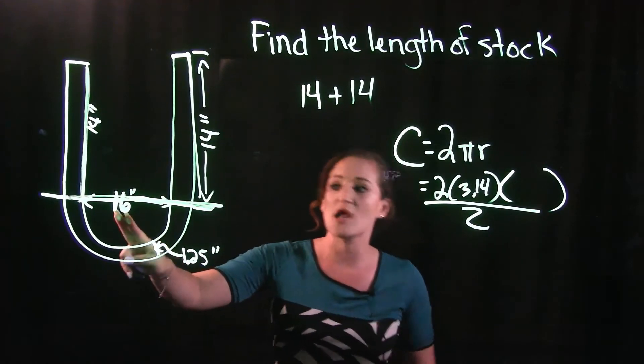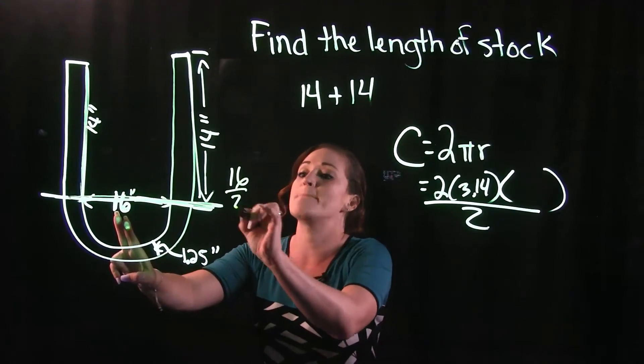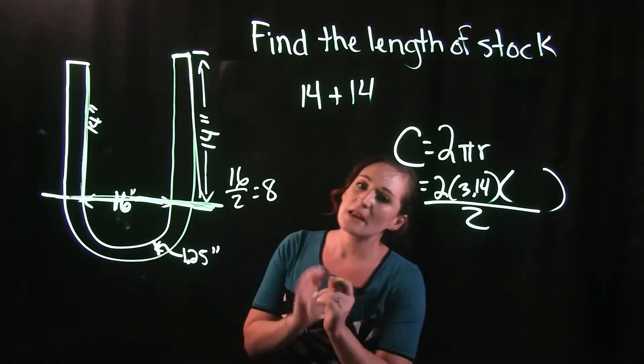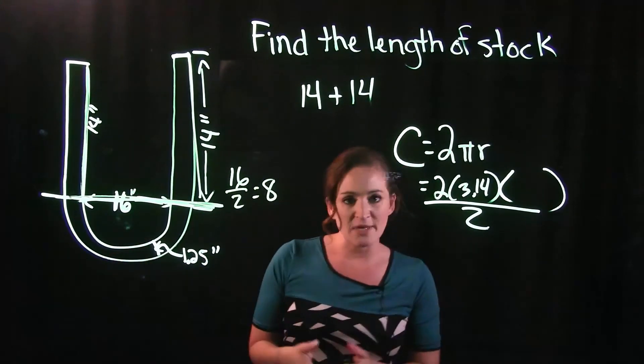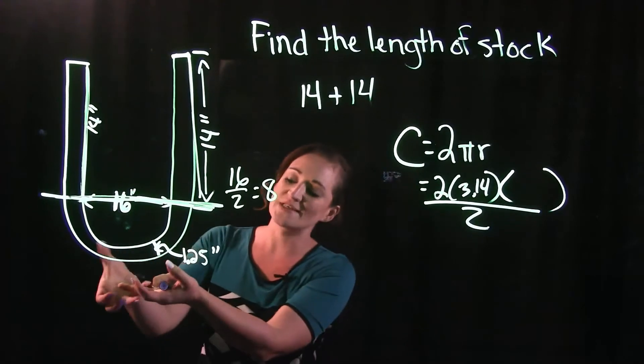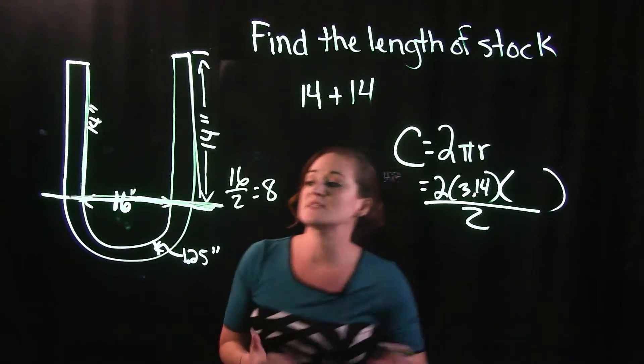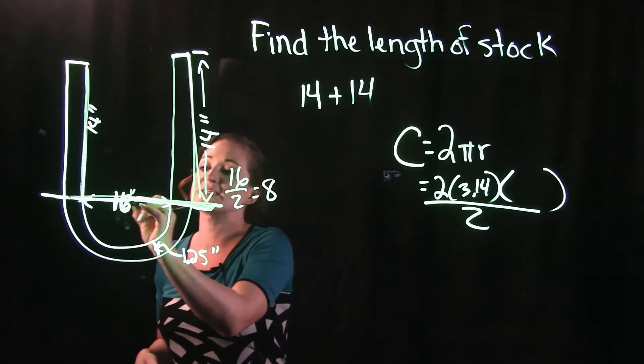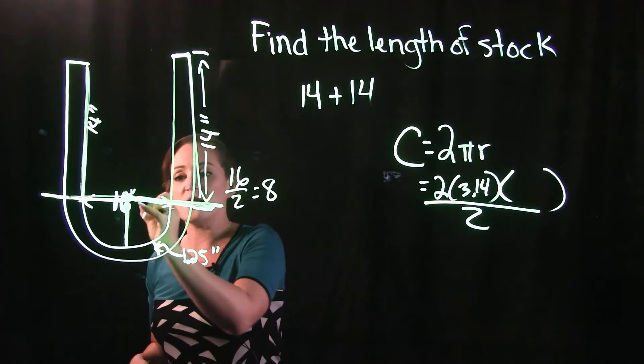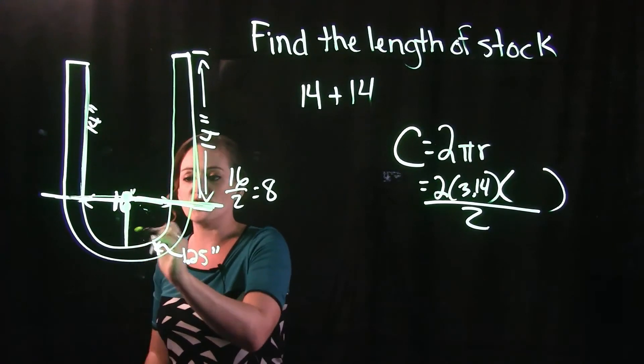But we do need to factor in what I mentioned earlier, this whole fact that one side gets stretched, one side gets compressed. The way that that works here: if the diameter is 16, that means the radius from the center of the circle out to the edge is 8.